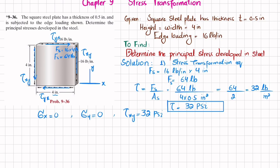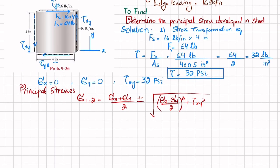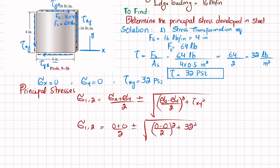We will use the stress transformation equation for finding the principal stresses. The formula is: sigma_1,2 equals (sigma_x + sigma_y)/2 ± √[((sigma_x - sigma_y)/2)² + tau_xy²]. Substituting the values: (0 + 0)/2 ± √[((0 - 0)/2)² + 32²].